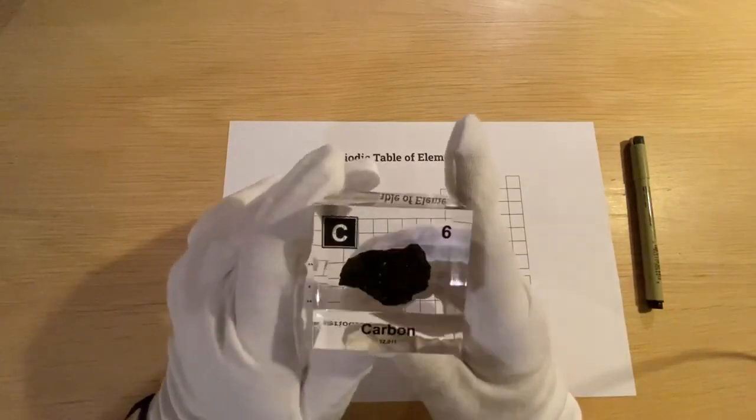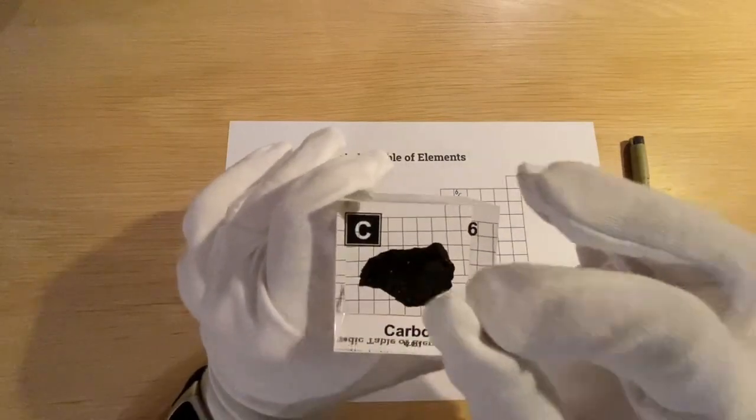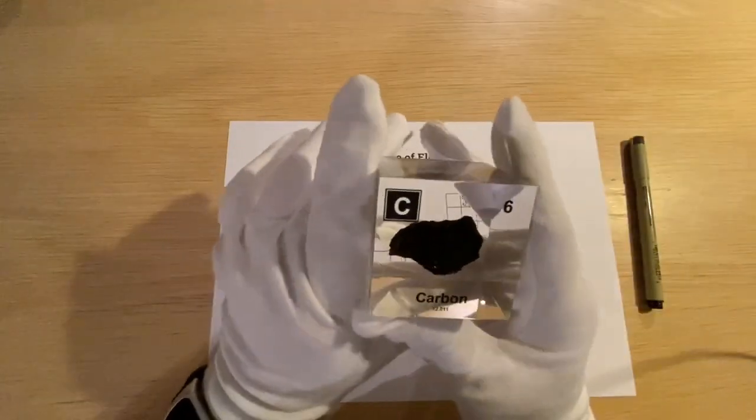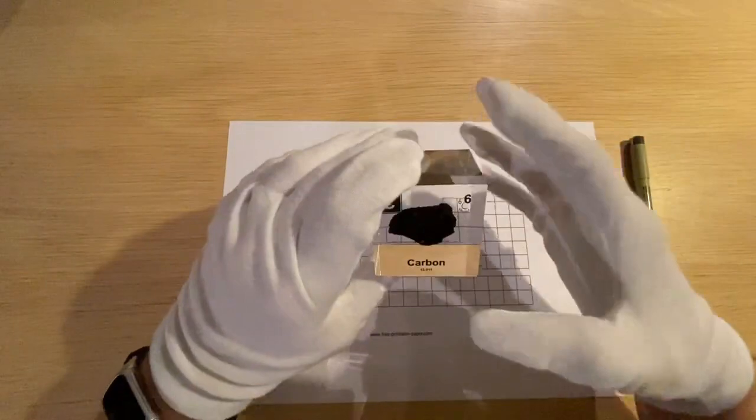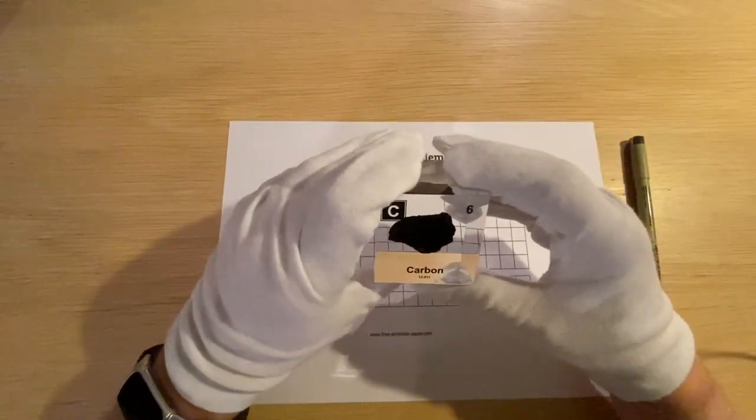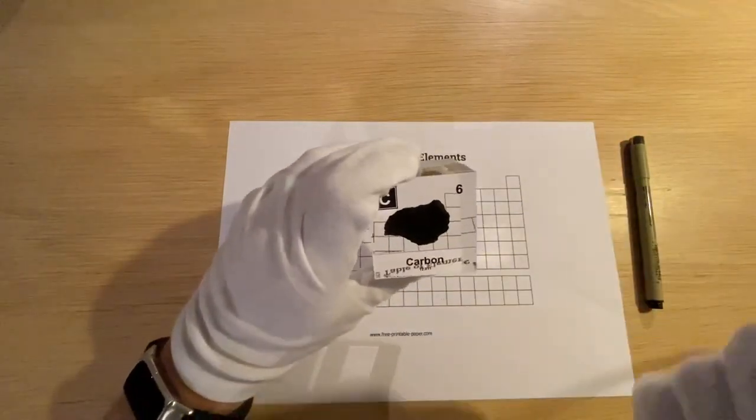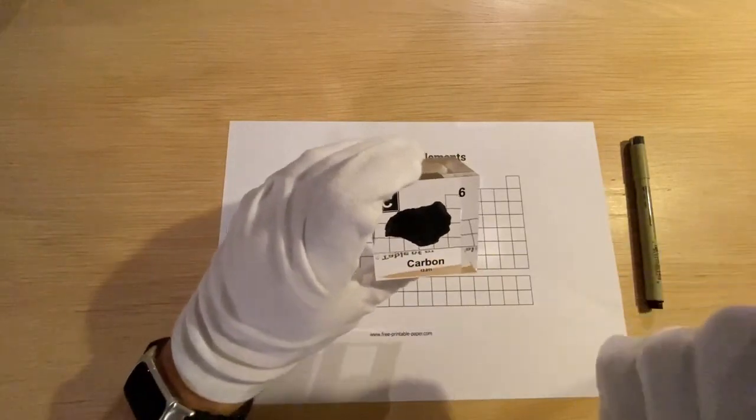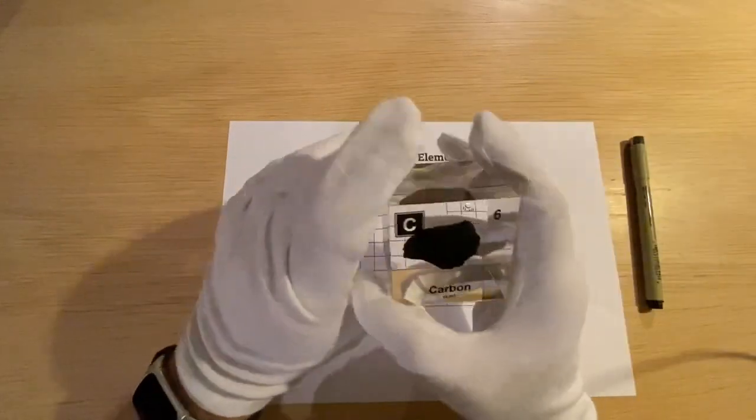Graphite inside of pencils is made of carbon. Also, when people in the old days used to make pencils, they would burn the tip of sticks, and if you burn the tip of sticks you can write with them. It's also carbon-based.